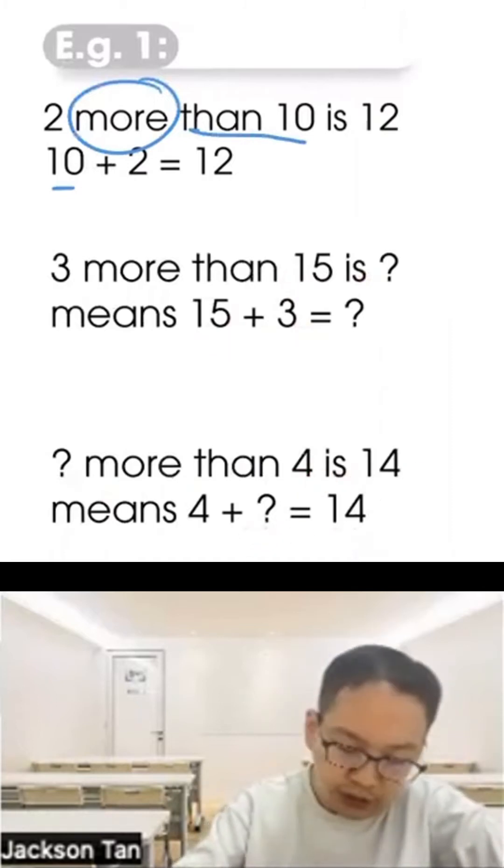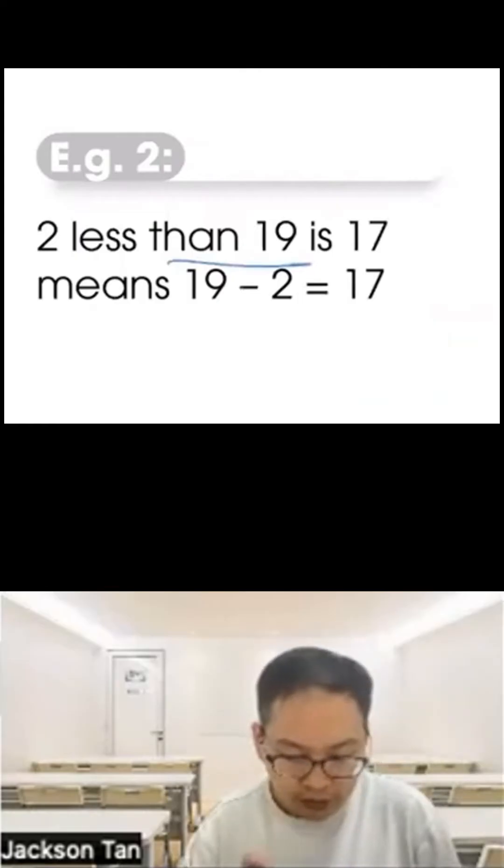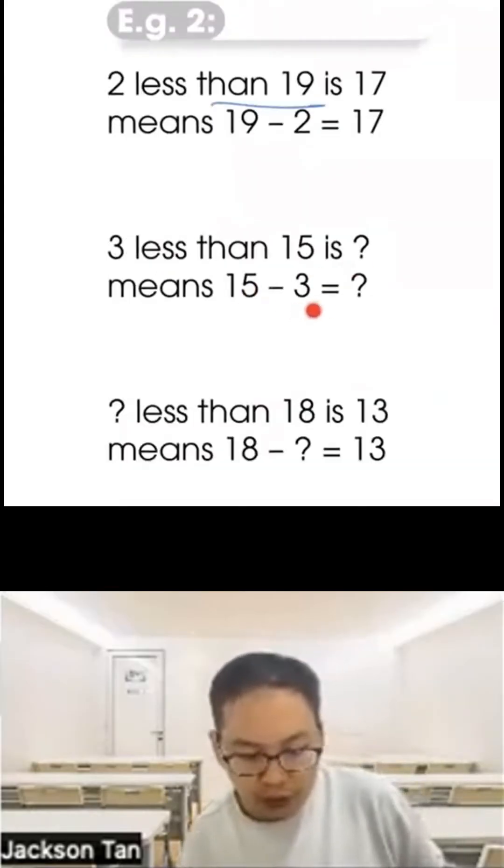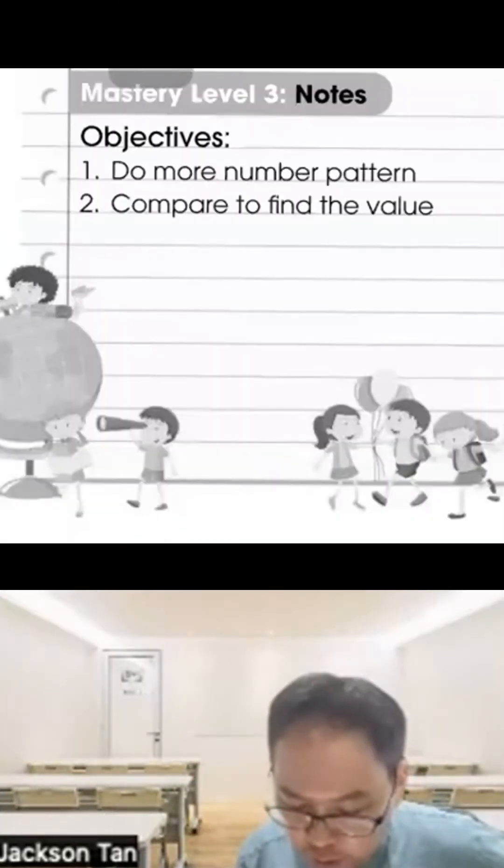Example 2: Two less than 19 is 19 take away 2, giving 17. Three less than 15 is 15 minus 3. What less than 18 is 13? 18 minus 5 equals 13. Mastery Level 3: The objective is to identify number patterns by comparing values.